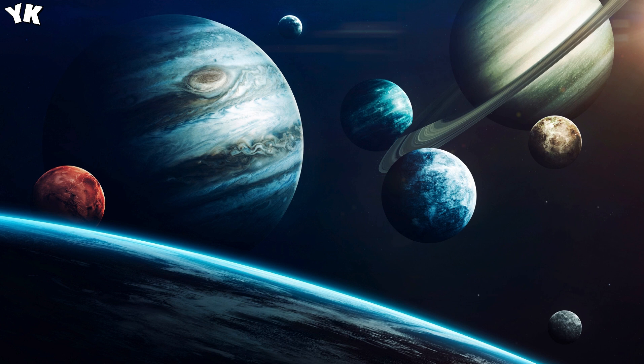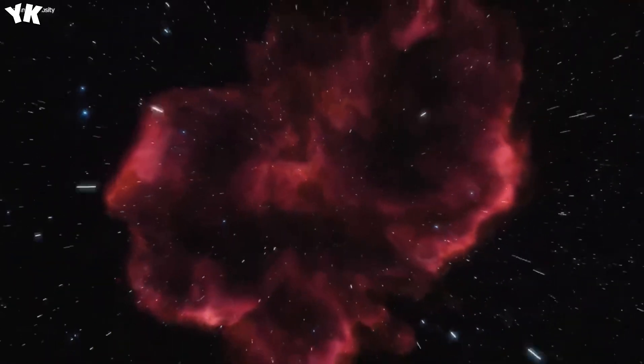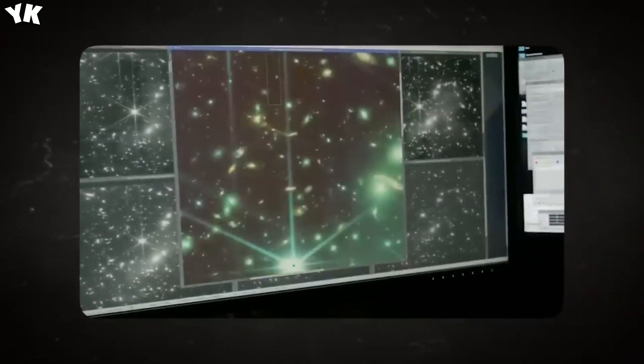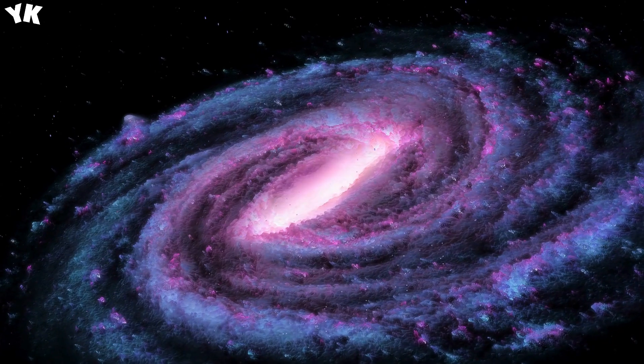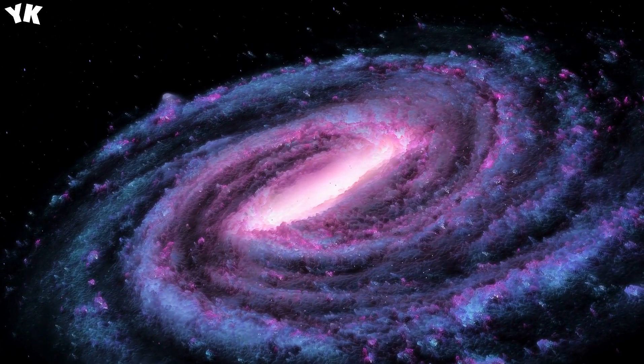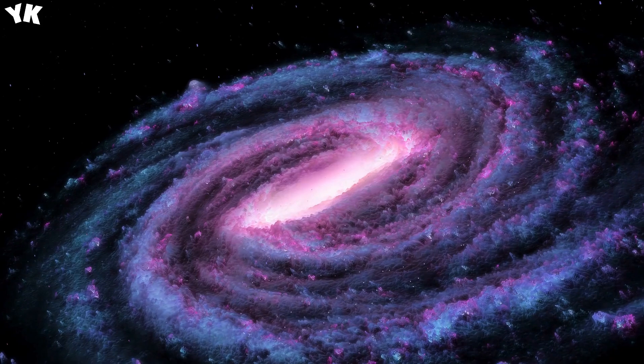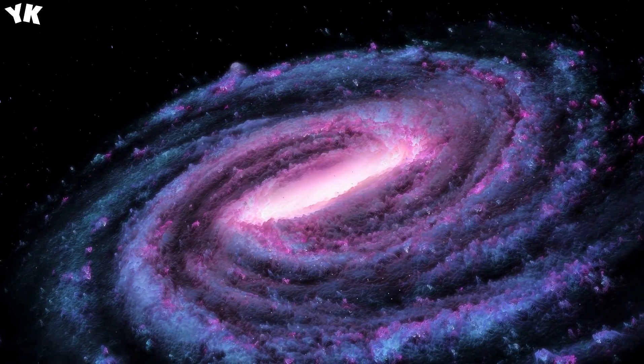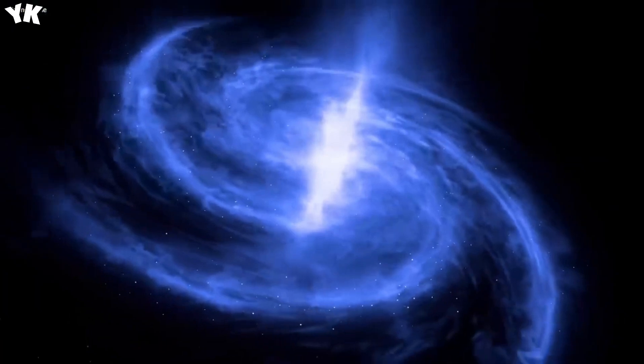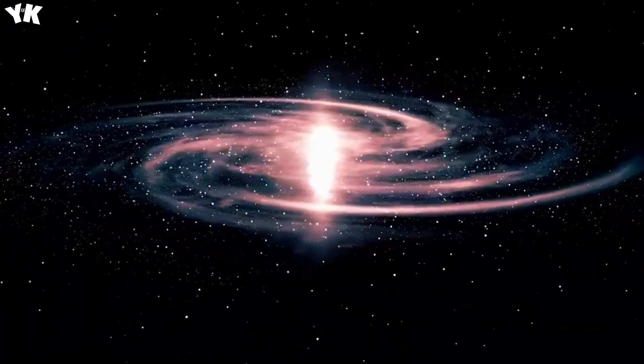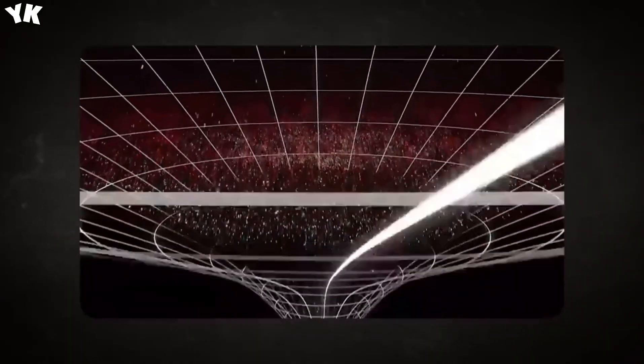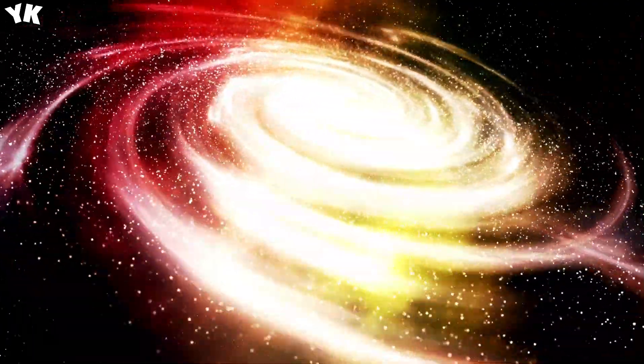The James Webb Space Telescope has revealed a vast number of galaxies, prompting questions about the accuracy of predictions made by the Big Bang theory. According to this theory, at the beginning of the universe, all matter, energy, and cosmic building blocks were compressed into an infinitesimally tiny, highly dense point called a singularity. Within this singularity, the laws of physics, particularly those described by Einstein's general relativity equations, suggest that an unimaginable amount of mass and energy existed in an extremely compressed state, resulting in inconceivable temperatures.